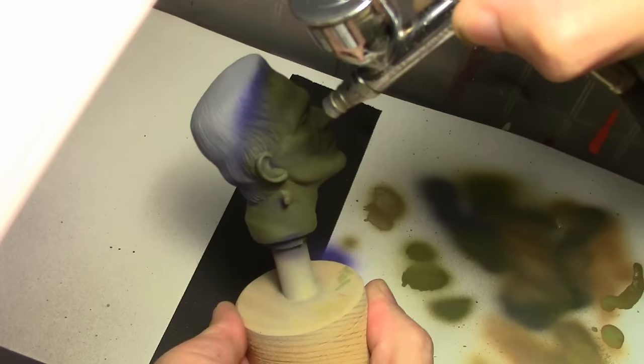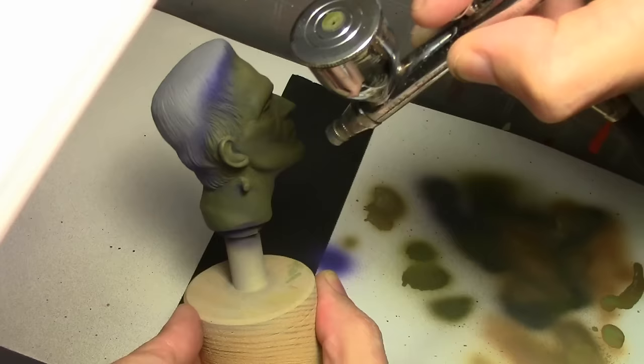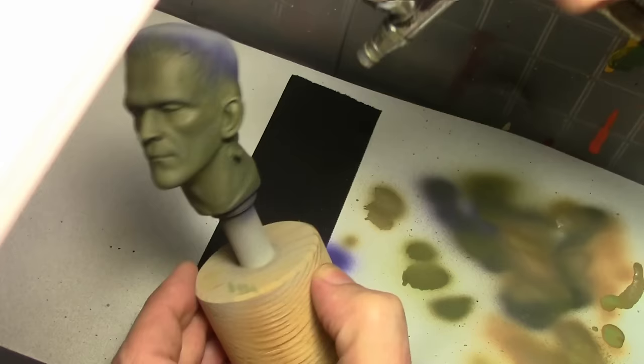Vallejo paints, at least the model and the game color range, you can use them through an airbrush, but they tend to be so thick, you do have to keep them stirred up. You can spray for about 30 seconds if you're lucky, and then the paint will start kind of condensing at the bottom, and you have to mix up your paint a little bit. It is some back and forth, it is a slow process.